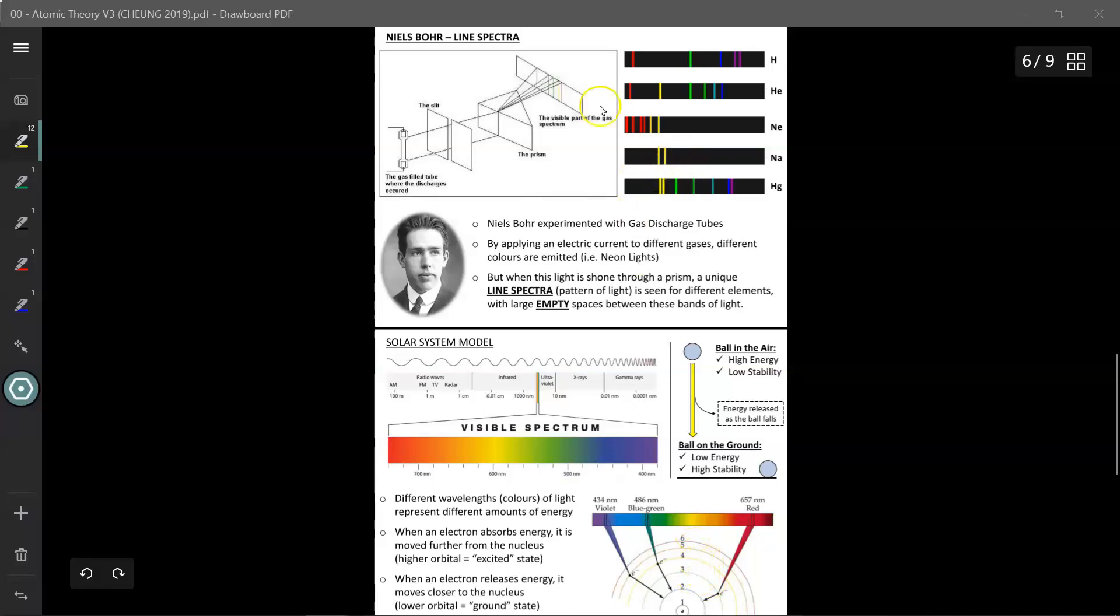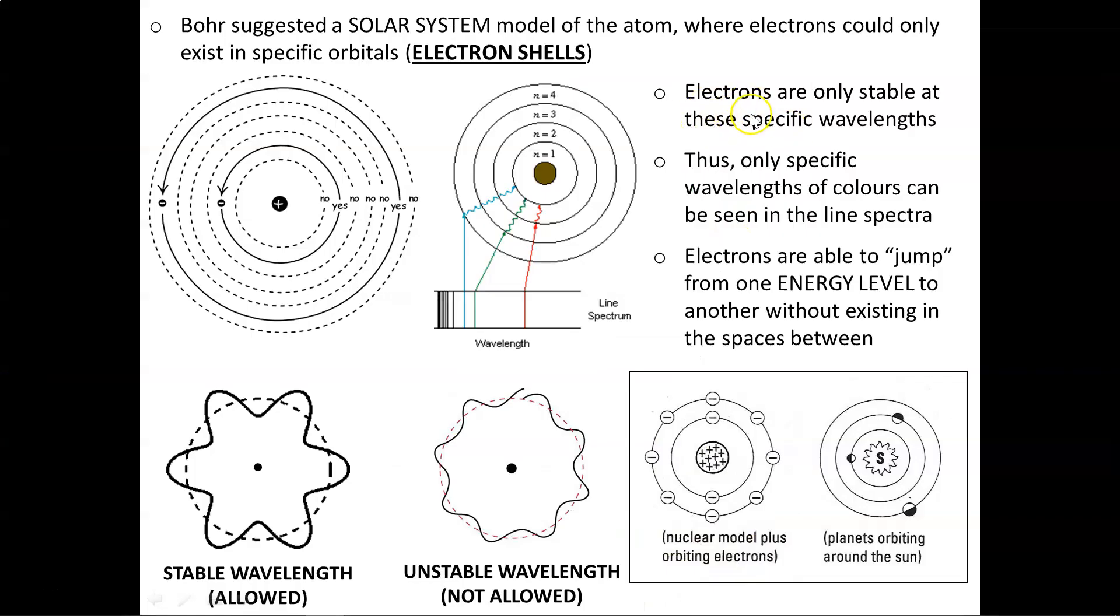And since every element has its own unique electron pattern, how their electrons release their energy will also be unique. And that results in a line spectra that is characteristic to each and every single element on the periodic table. To summarize, electrons are only stable at these specific wavelengths. Thus, only specific wavelengths of colors can be seen in the line spectra. And finally, electrons are able to jump from one energy level to the next without existing in the spaces between, like planets orbiting the sun. You don't see Mars orbiting the sun here one year, then jumping out over here the next year. They stay in their set orbitals. Similarly, electrons also stay in their set orbitals.